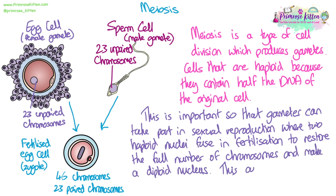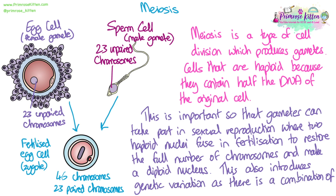That new nucleus in the new zygote — the fertilised egg cell — is a diploid nucleus, so it has all of the chromosomes that it needs. It's also important because it's the way we introduce genetic variation, making a new unique combination of those different parental chromosomes.